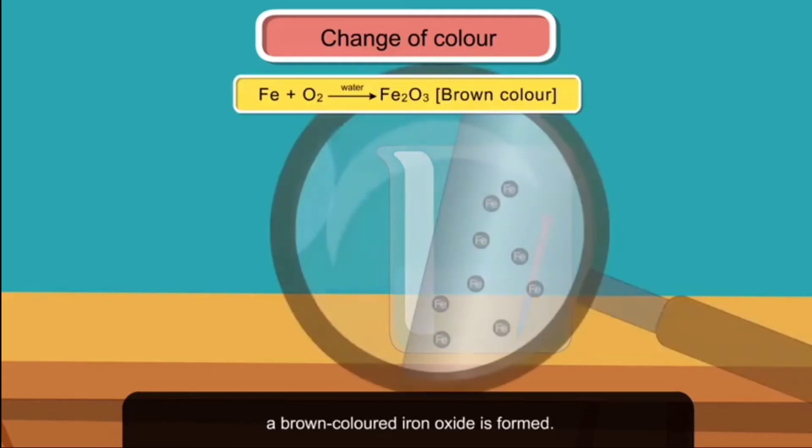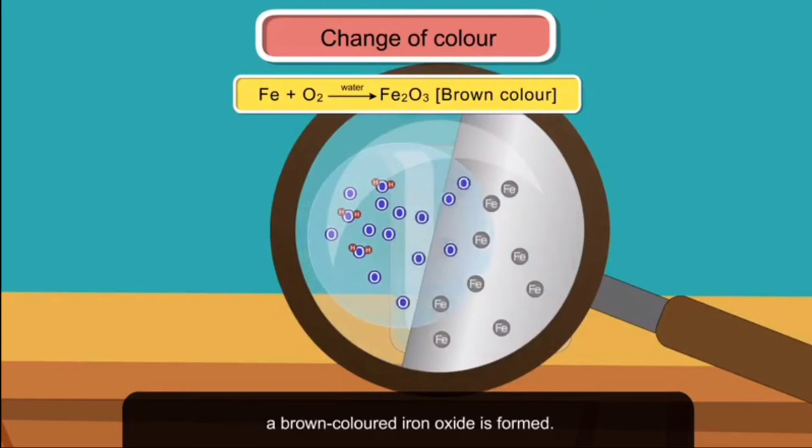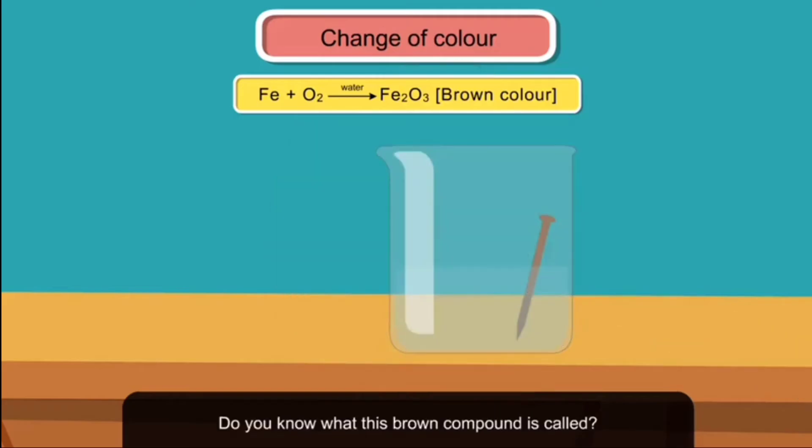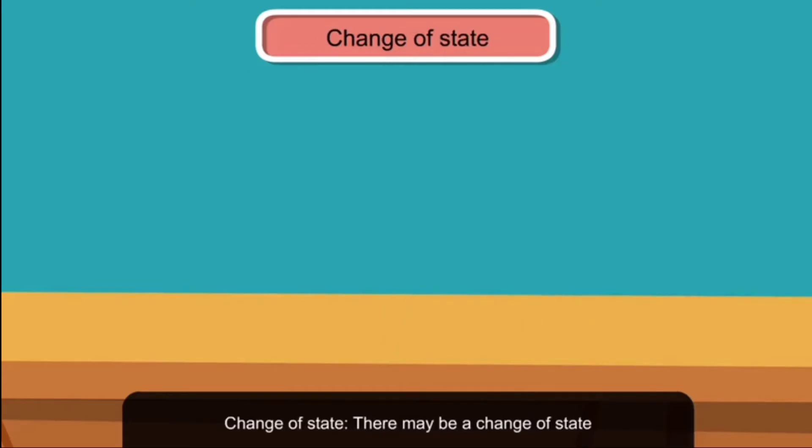The color of the reactant iron changes from silvery white to brown. Do you know what this brown compound is called? Yes, it is called rust. Change of state: There may be a change of state in a chemical reaction.